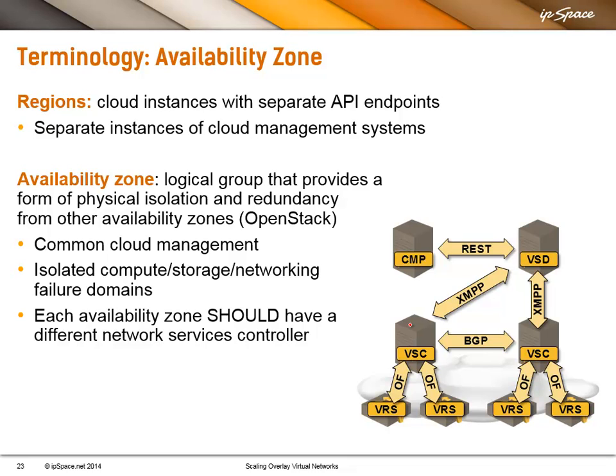First, they split their infrastructure into regions. Regions are cloud instances that have separate API endpoints, so each region would have its own copy or cluster of cloud management systems. So that if you get problems within one region — for example, database corruption or a software bug that crashes the cluster — all the other regions are unaffected.